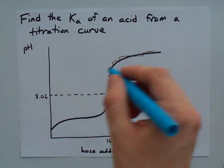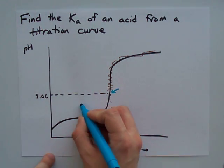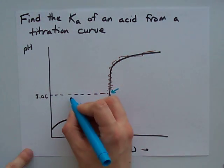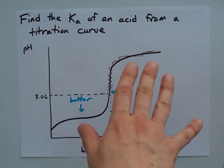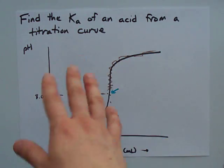What you'll notice about the titration curve is that there is a buffer region here. The buffer region is the region where you've added just enough base that you have some conjugate base in solution, but you also have some acid in solution.